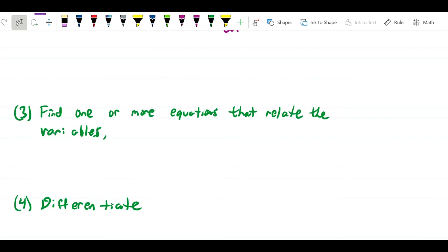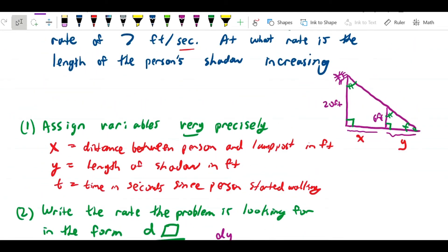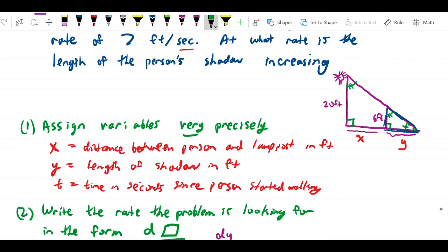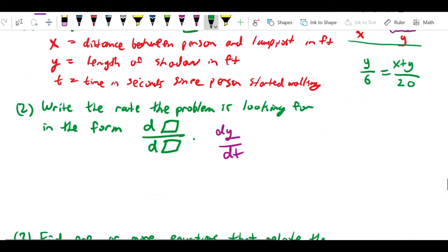Next, find one or more equations that relate the variables. That's going to be the similar triangles equation. What we can see is that this small triangle here... Let's put the small triangle in blue. A small triangle... The ratio of one leg of this right triangle to another is y over 6. And the big triangle, which has those legs, and that hypotenuse, is going to be... The equivalent leg to y is going to be x plus y. That's the length of that leg, and that is the equivalent vertical leg of that triangle is 20. So this is the equation. y over 6 equals x plus y over 20.